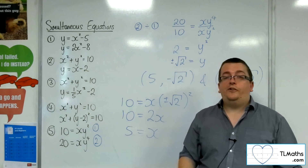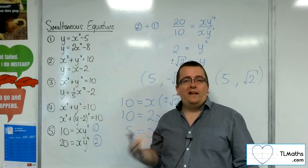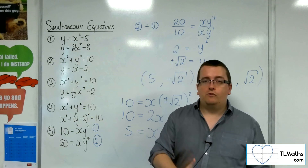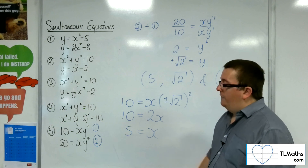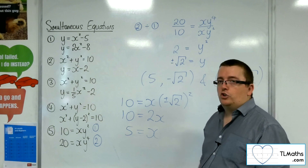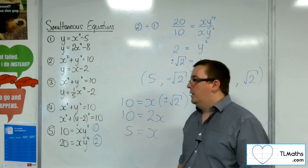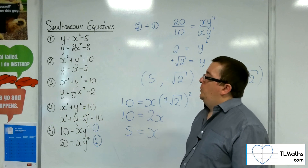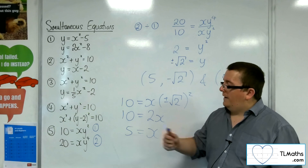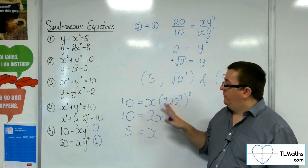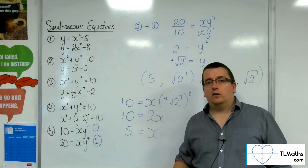I would definitely suggest with all five of these that you make sure you know what they look like. Have a look at them on Desmos, Autograph, or GeoGebra — some graphing package or your graphical calculator. You might have some difficulty programming the circles into a graphical calculator, so I'd go on to Desmos and see where these points are and what these curves actually look like.